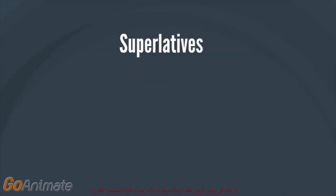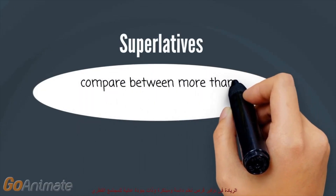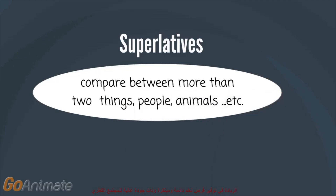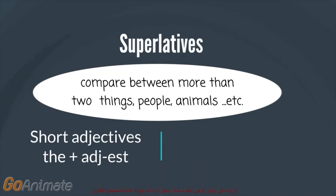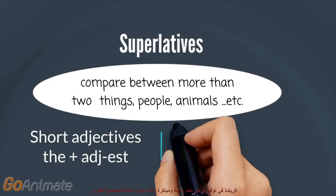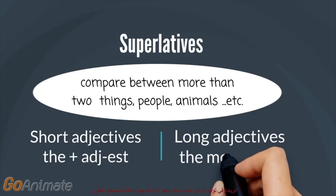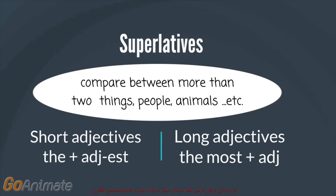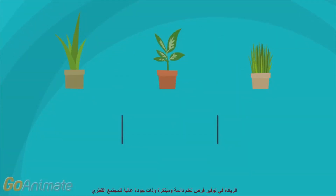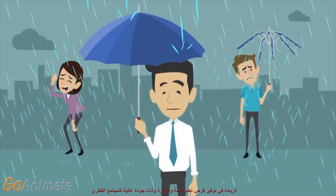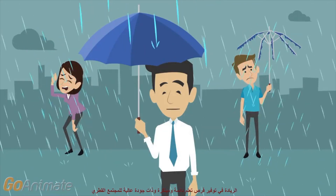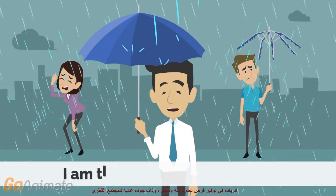Let me turn your attention to the superlative form. We usually use this to compare between more than two things — two people, two animals, etc. But in this case, we add -EST instead of -ER to short adjectives, and 'most' instead of 'more' with long adjectives. Most importantly, we use 'the' before the adjective. Example: the plant on the right is tall, the second plant is taller, but the third is the tallest. Another example: it's raining and I am the only one here who has an umbrella, so I am the luckiest person here.